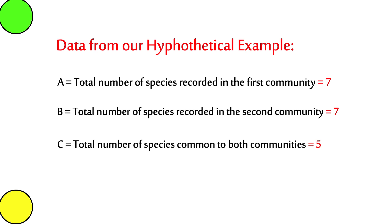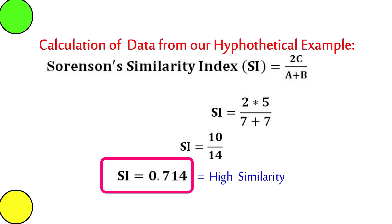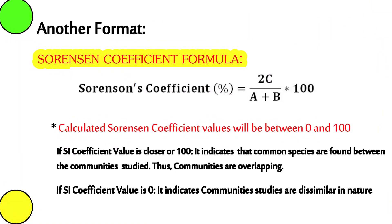Going back to our hypothetical study data: A equals seven, B equals seven, and C equals five. Applying the Sorensen Similarity Index formula, the calculated value obtained is 0.714. Since this value is between 0 and 1 and is closer to 1, it indicates that there is a high similarity between the two communities studied.